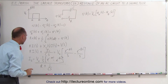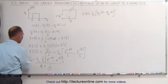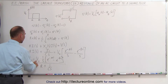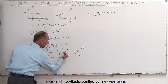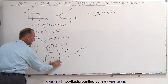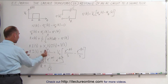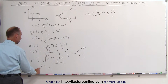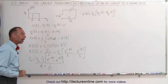Rearranging the terms, the current can be solved for in terms of V sub nought. Pulling out 1 over S with the remaining shifts in the S domain and factoring out the current I, we end up with R plus 1 over C·S in the denominator.